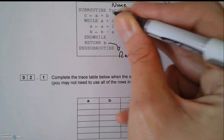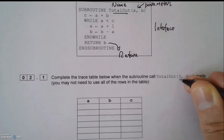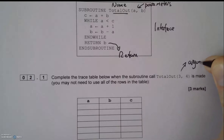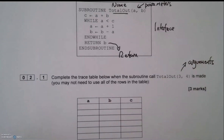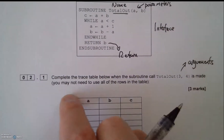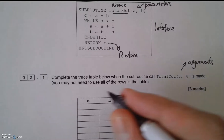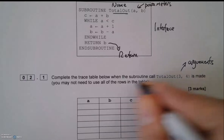The interface means this would work on its own — it would only run when the main program calls 'totalout' and passes the values. The values here, 'totalout(3, 4)', are something called the arguments that are passed into the subroutine. That isn't part of the question, but it's just adding some context.